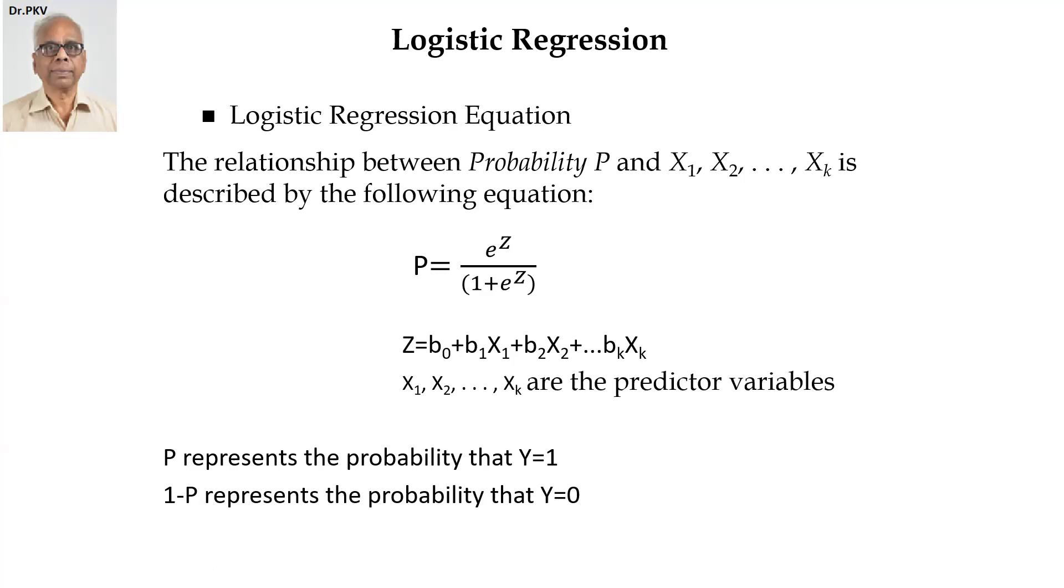In other words, Z is a regression. It's a linear regression. Multiple linear regression Z. But the probability is achieved by E raised to the power Z divided by 1 plus E raised to the power Z. And what is this P? It represents the probability when Y equal to 1. And 1 minus P represents the probability when Y is equal to 0.